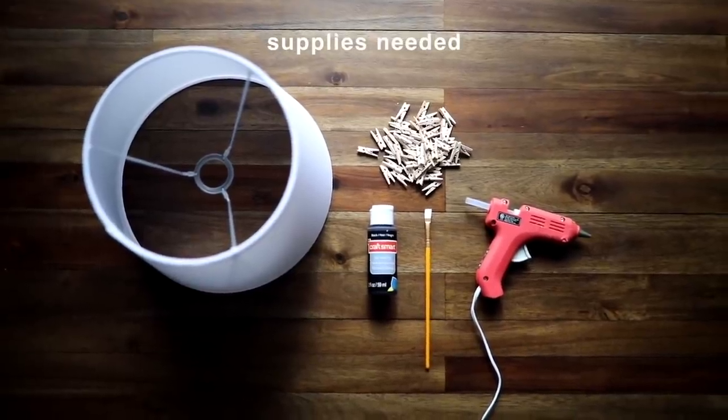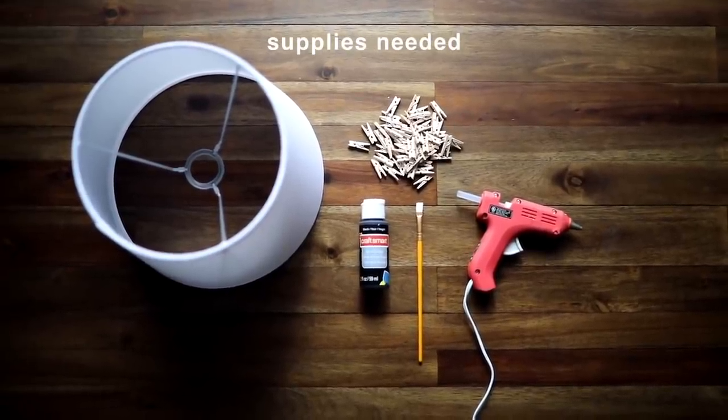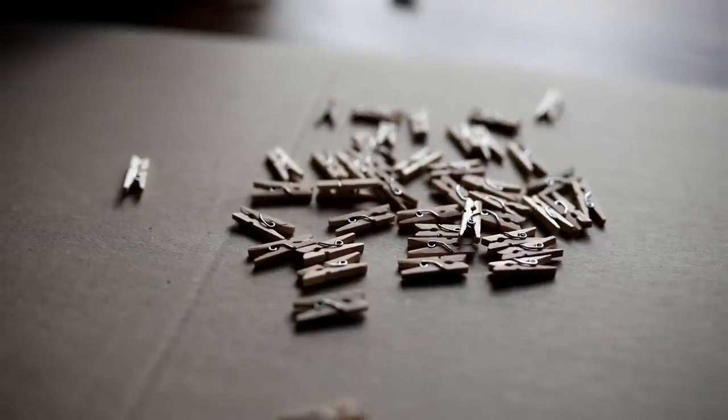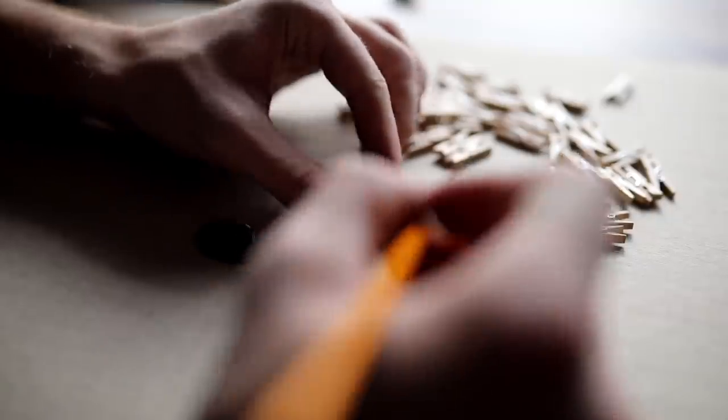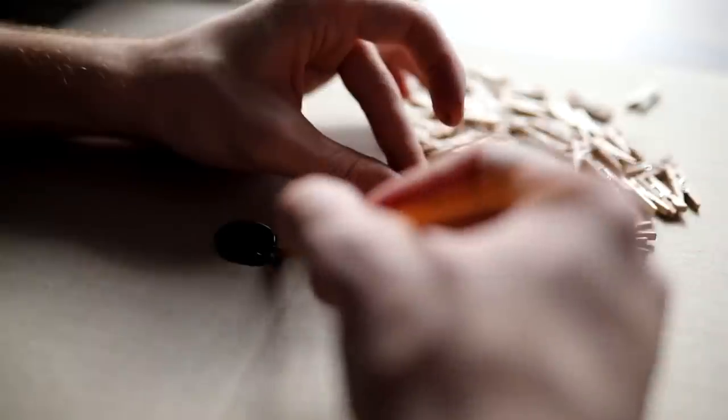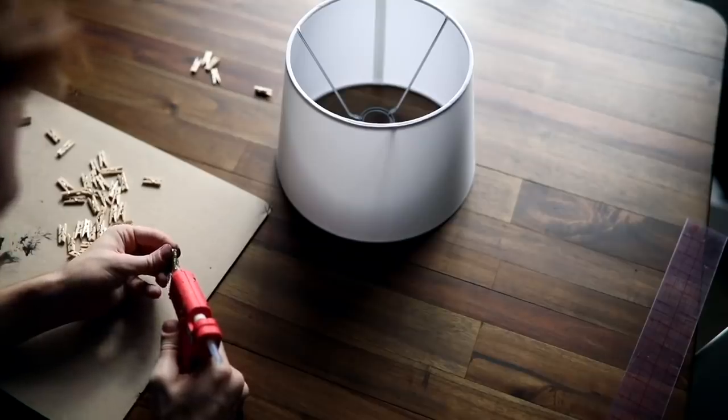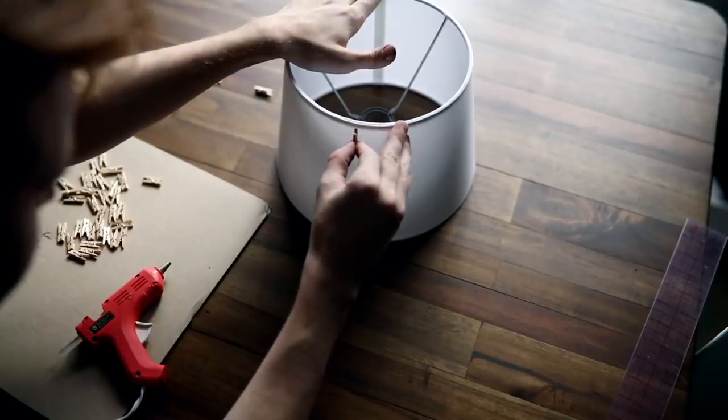This DIY may be the easiest but it's one of my favorites. All you need is a lampshade, some wood clips, paint, and a hot glue gun. I started by taking my wood clips and painting them black—I painted half of them because I wanted a variety of wood and black.